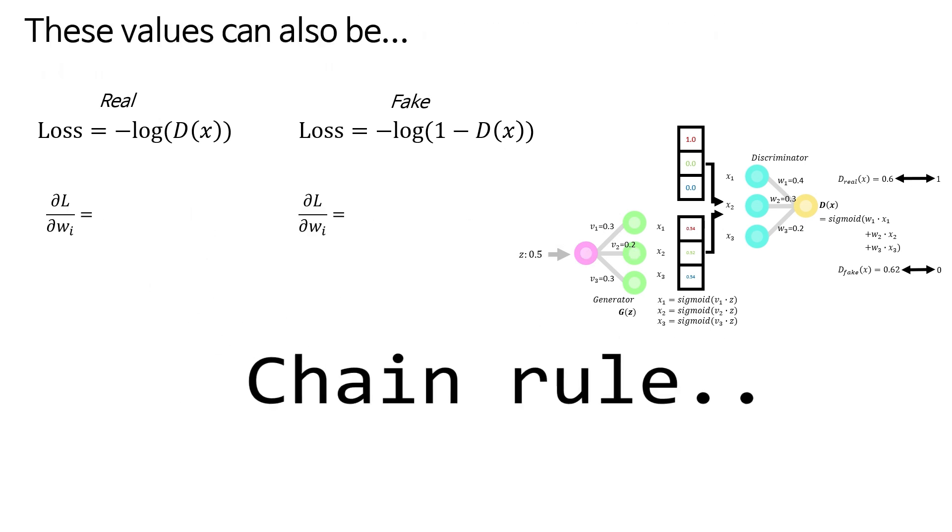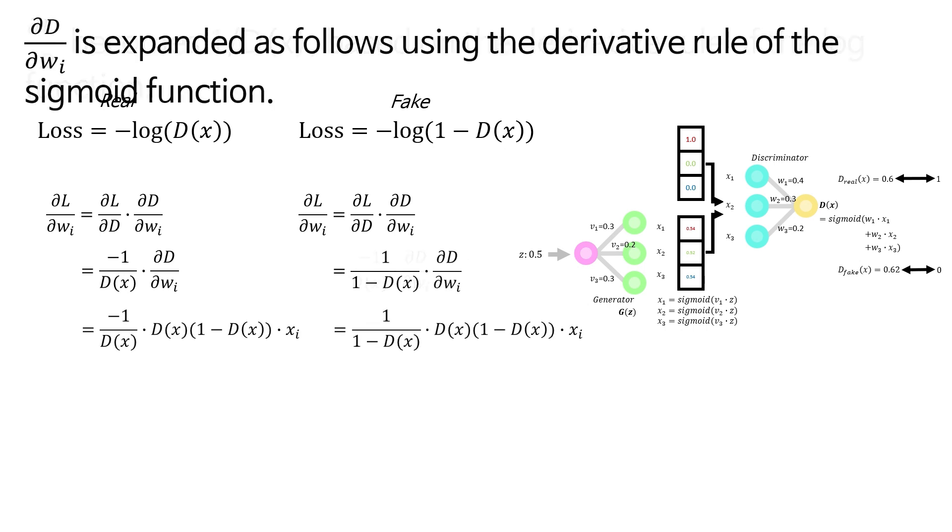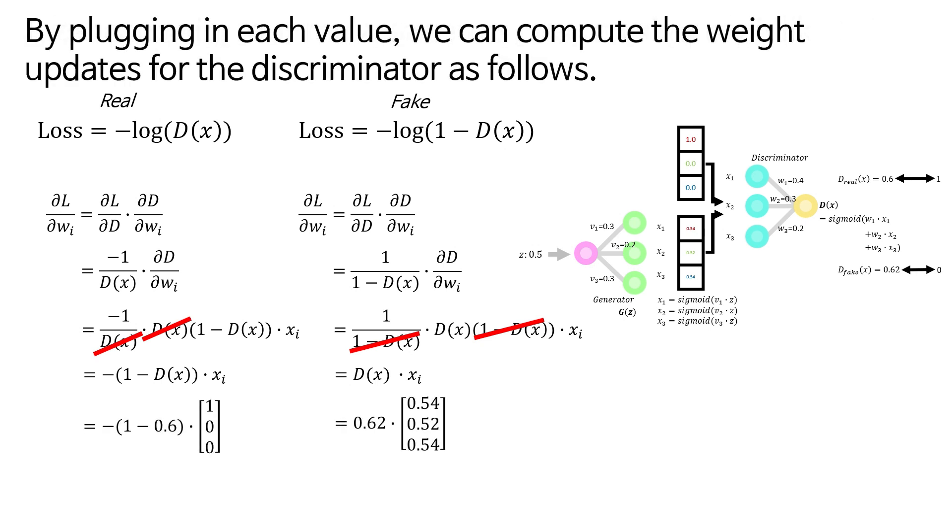These values can also be ∂L/∂D equals 1/D(x) based on the derivative rule of the log function. ∂D/∂w_i is expanded as follows using the derivative rule of the sigmoid function. After cancelling out the zero terms, we can simplify it like this. By plugging in each value, we can compute the weight updates for the discriminator as follows.